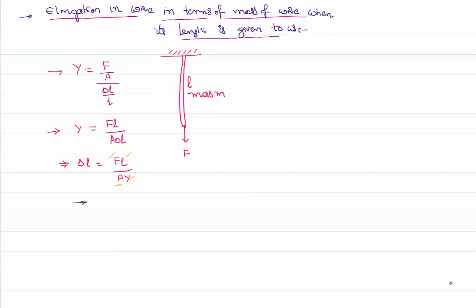So I have to write that area of the wire in terms of the mass of the wire. I can write volume of the wire as area of cross section of that cylindrical wire multiplied by length.